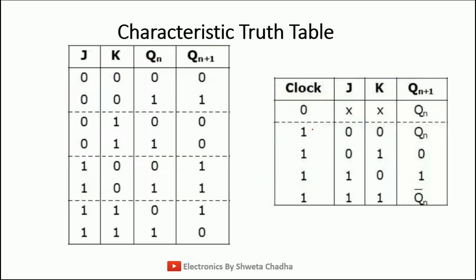The characteristic truth table. For the characteristic truth table, all these cases will be mentioned for clock equal to 1. QN is our previous condition and QN+1 is our next condition. The first case is when J is 0, K is 0 — output is no change condition. What is the meaning of no change? If the previous was 0, next will remain 0. If the previous was 1, next will remain 1.